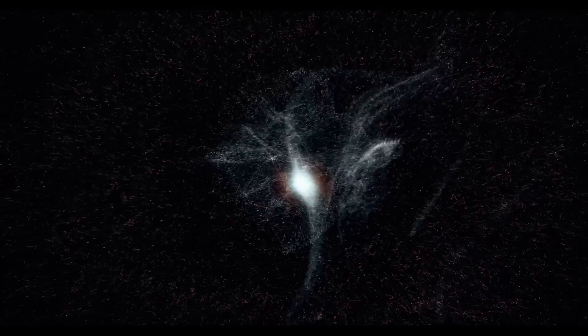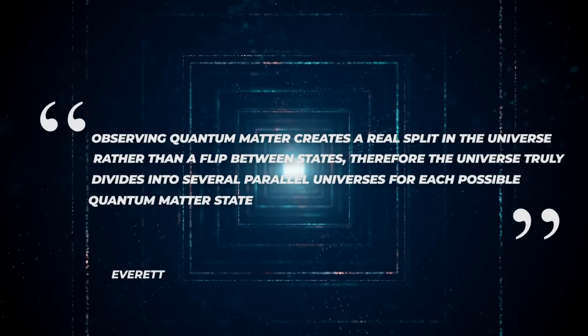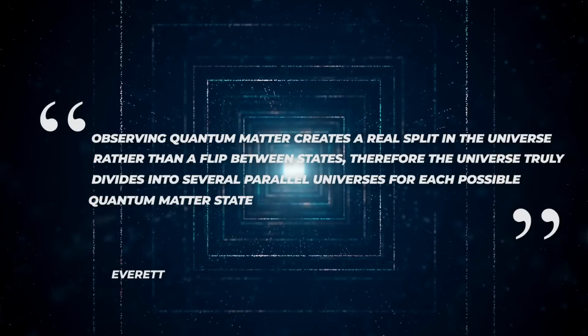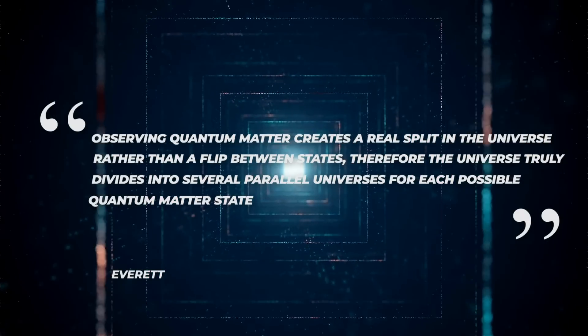When we observe them, our observation affects their behavior, causing them to pick one state at that point in time. You might think of Everett's Many Worlds Theory as an alternative to Bohr's concept of quantum matter. According to Everett, observing quantum matter creates a real split in the universe rather than a flip between states. Therefore, the universe truly replicates and divides into several parallel universes for each possible quantum matter state.